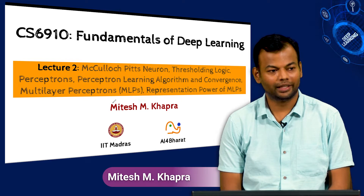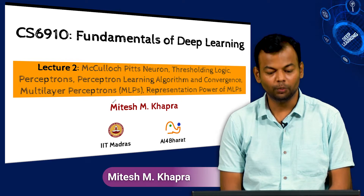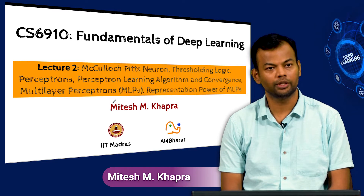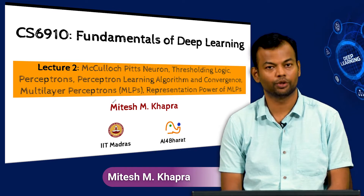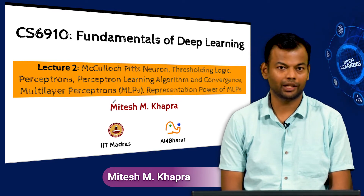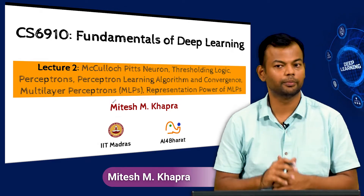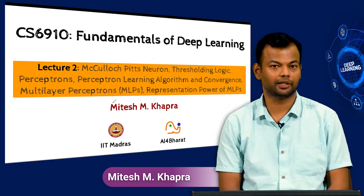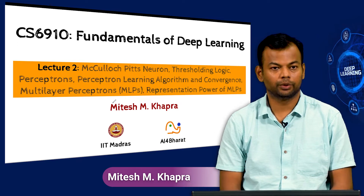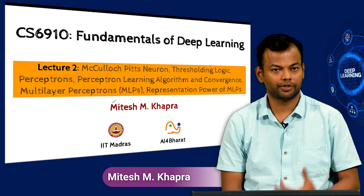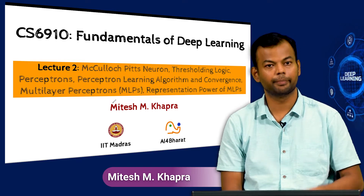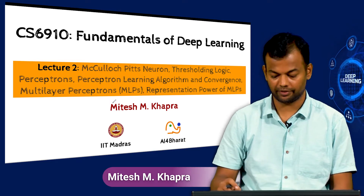Hi everyone, welcome to lecture 2. In this lecture we are going to talk about different neurons, McCulloch-Pitts neuron, thresholding logic, perceptrons and even look at the learning algorithm for perceptrons and see a small proof on why that algorithm would converge. And then we will end with what we call multi-layer perceptrons or MLPs and what is the representation power of such MLPs.